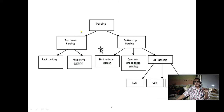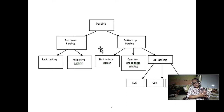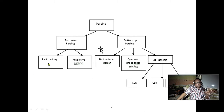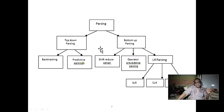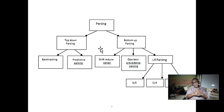Top-down parsing can use backtracking: if a rule fires and fails, it backtracks and tries another rule. This is acceptable for a limited number of terminals — maybe 20 or 30 — but with thousands of terminals, backtracking is not feasible. It takes huge time and space complexity and is definitely not linear. Therefore, we prefer predictive parsing, where no backtracking is allowed.